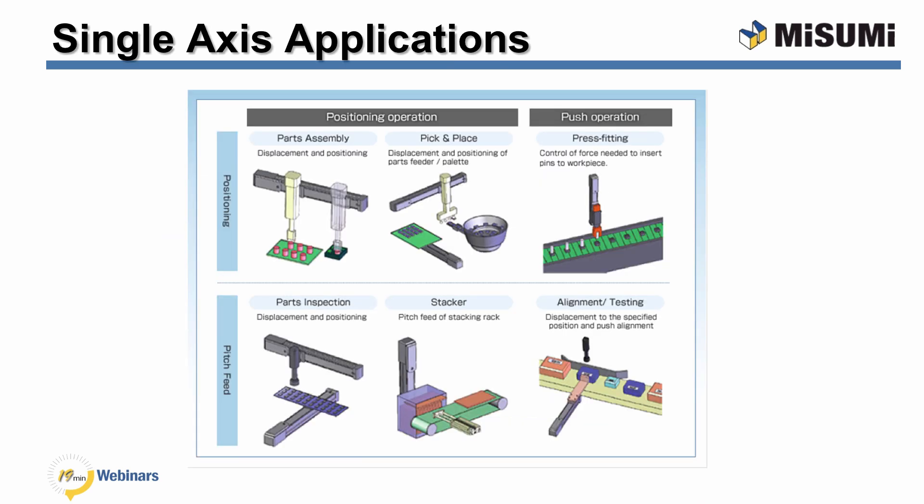These single axis robots are ideally suited for different types of applications: simple parts assembly, where you're picking up and placing parts; pick and place, transferring parts from one location to another; press fitting of parts, where you're force fitting one part into another. They're very useful for parts inspection — moving the inspection apparatus or the part itself. They're also very good for stacking and arranging parts, and for part alignment to ensure parts are in the proper location for inspecting and testing.